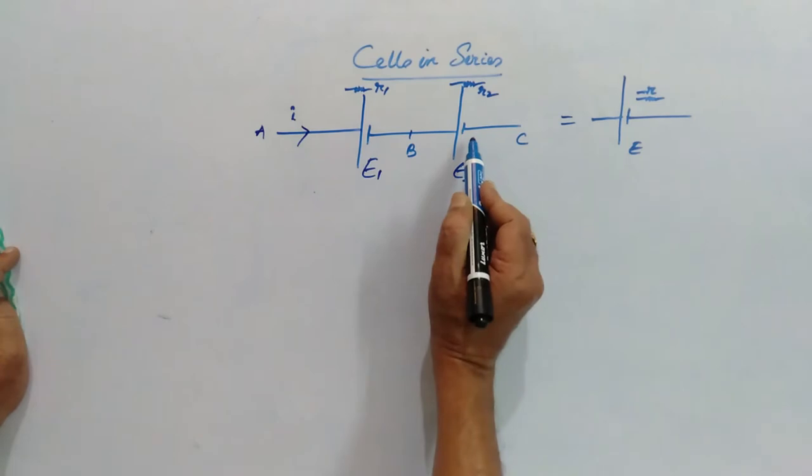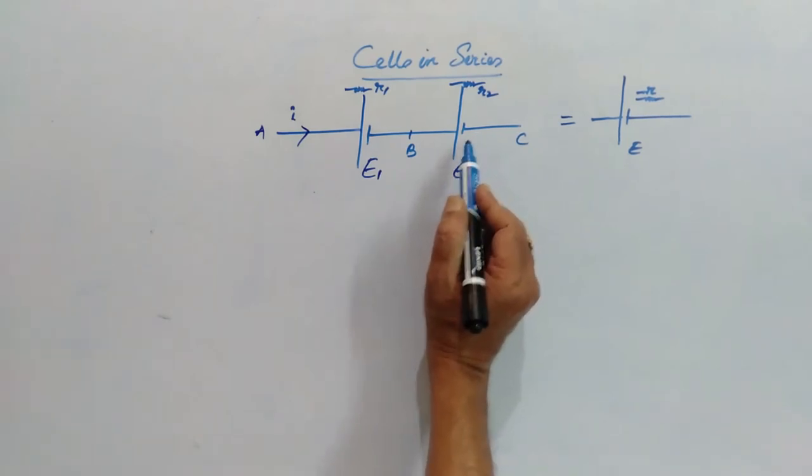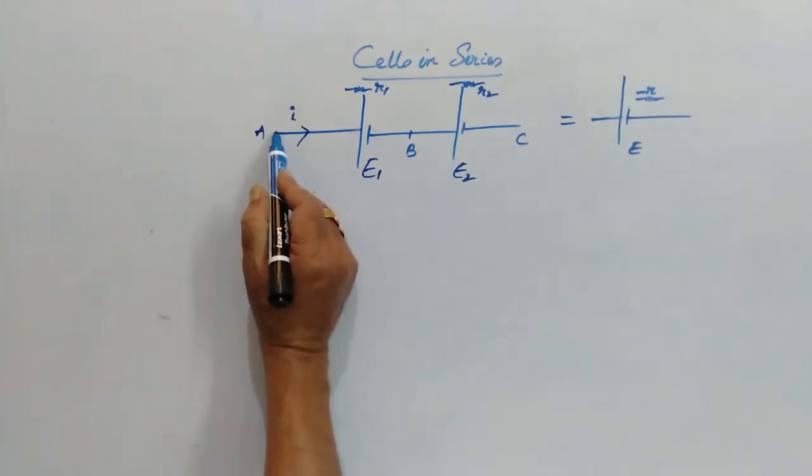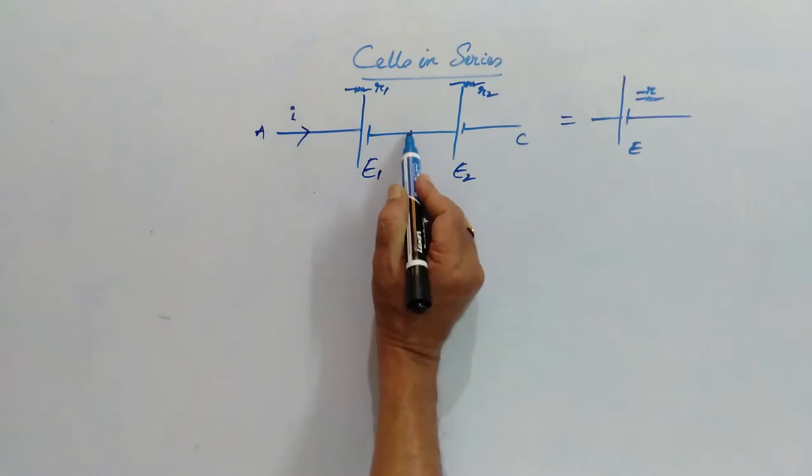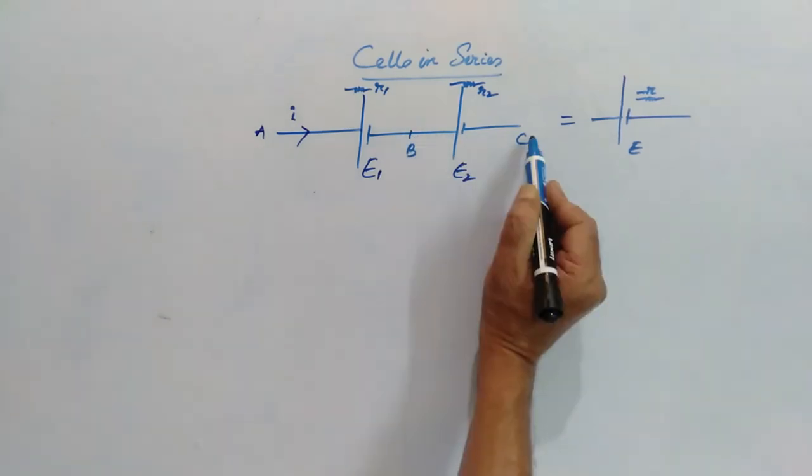Consider two cells connected in series. So let this point be A, somewhere in between two cells is B, and then C.